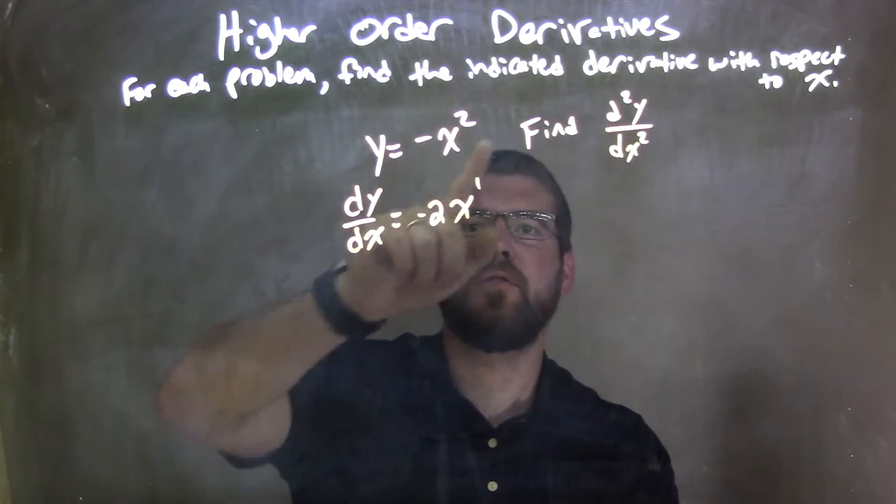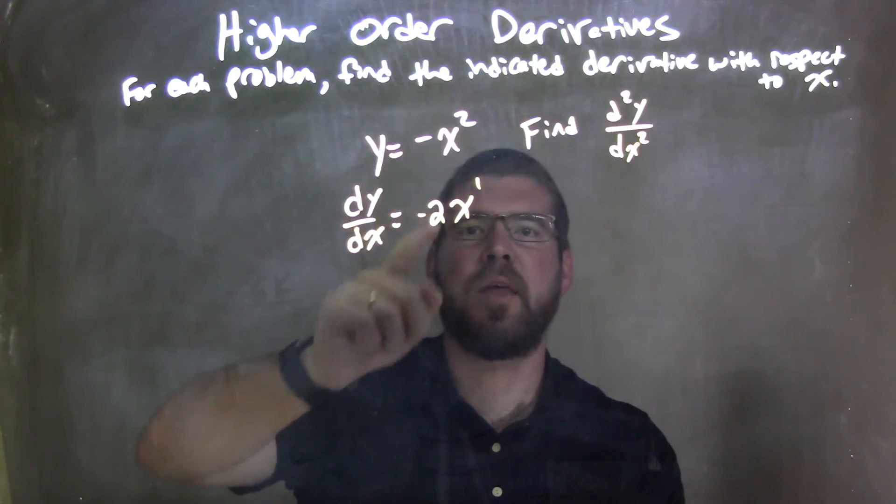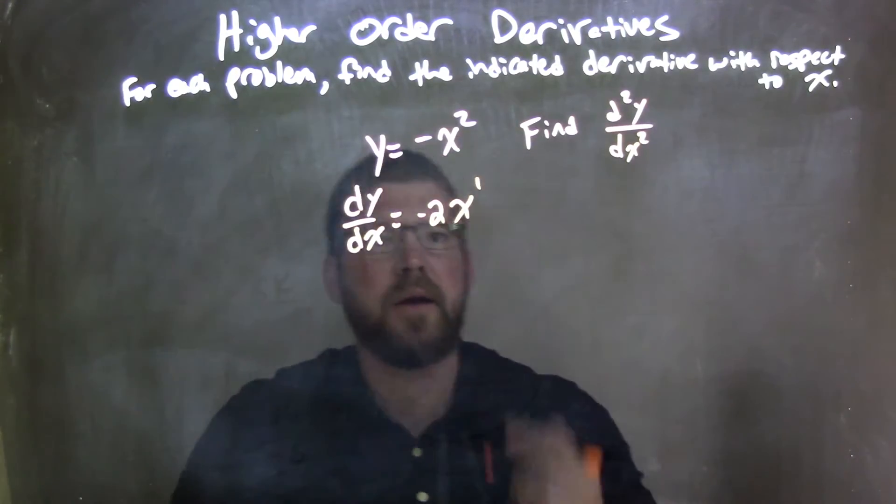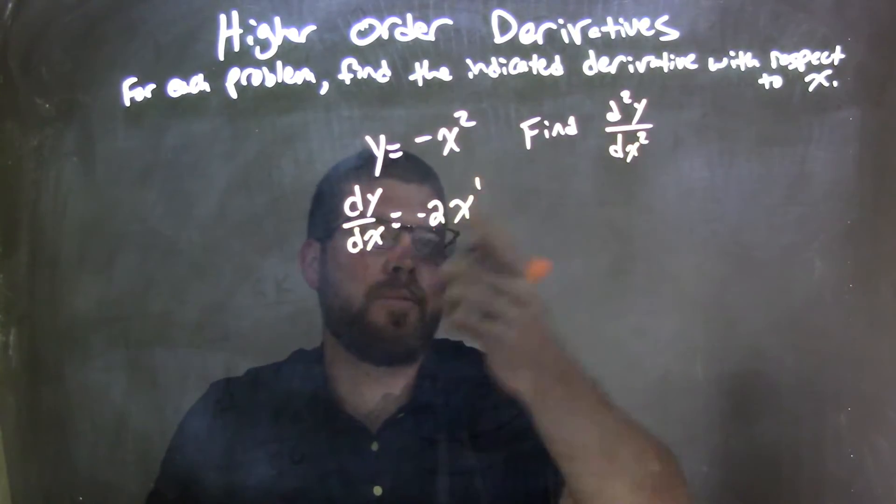So our first derivative, using the power rule—the 2 comes down, and then we subtract that exponent by 1, giving us 2 minus 1 equals 1.